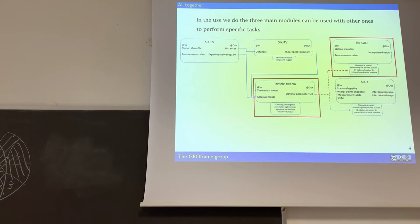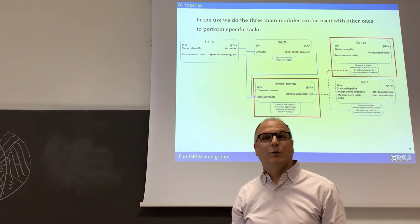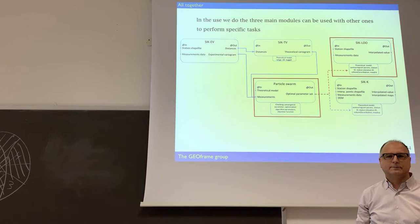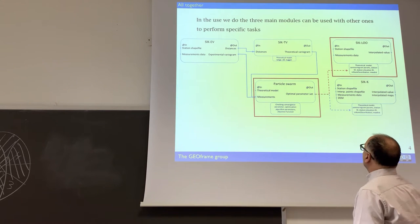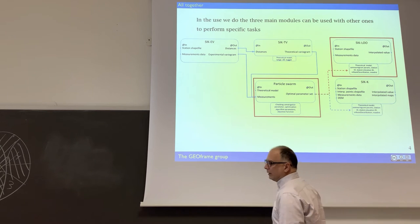Actually, here you only have the 6k component, but we have other two components. One is the particle swarm, which is a new entry, actually, is a calibrator. And the other is C LOO, is leave one out.